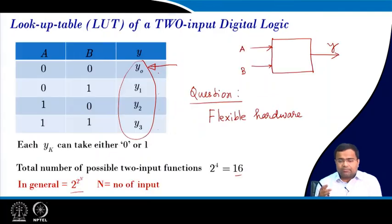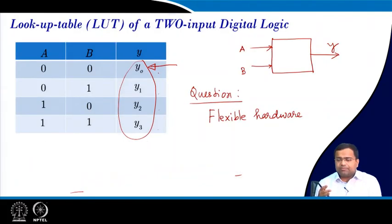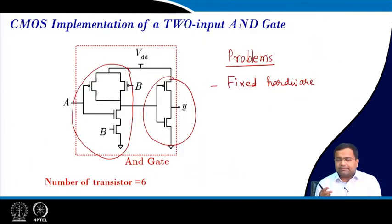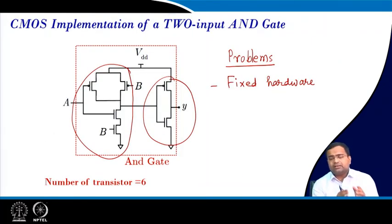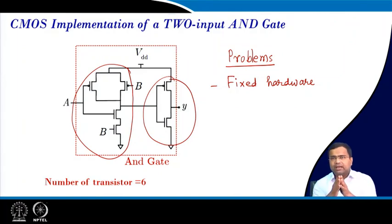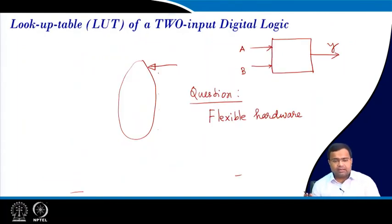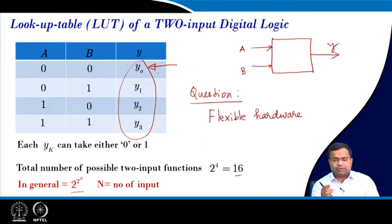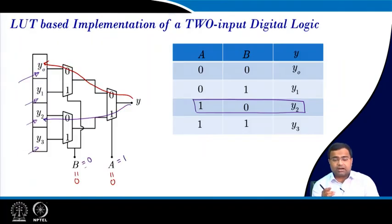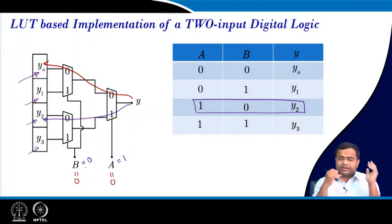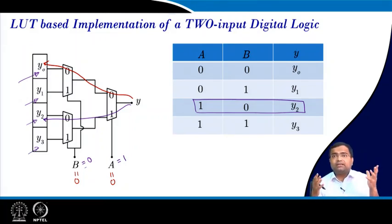But if you go to the earlier block-based implementation there will be propagation delay, and if you have more chain stages the propagation delay may increase. However, in this CMOS MUX architecture the propagation delay can be reduced. But there should be some penalty.